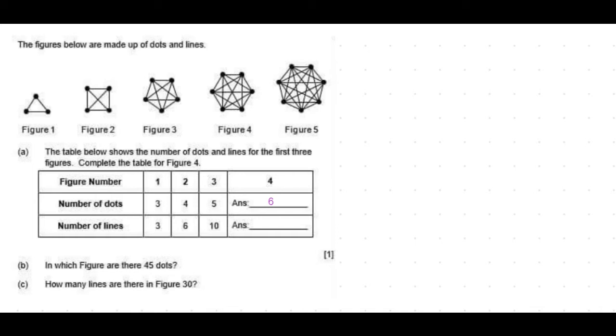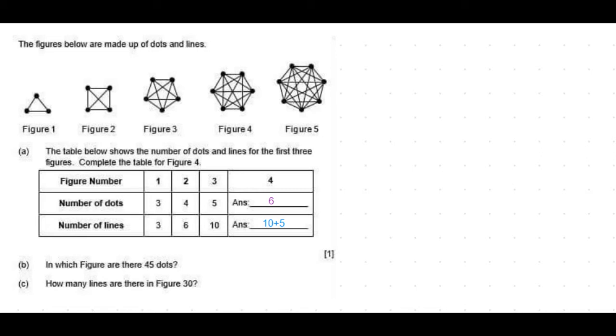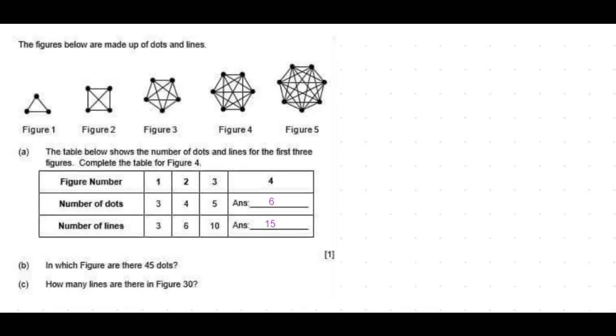Coming to the number of lines. Figure one has three lines, figure two has six lines which means that's a three increase. Figure three has ten lines which means there's a four increase. So the next one should be a five increase which is ten plus five, equal to fifteen for figure four.